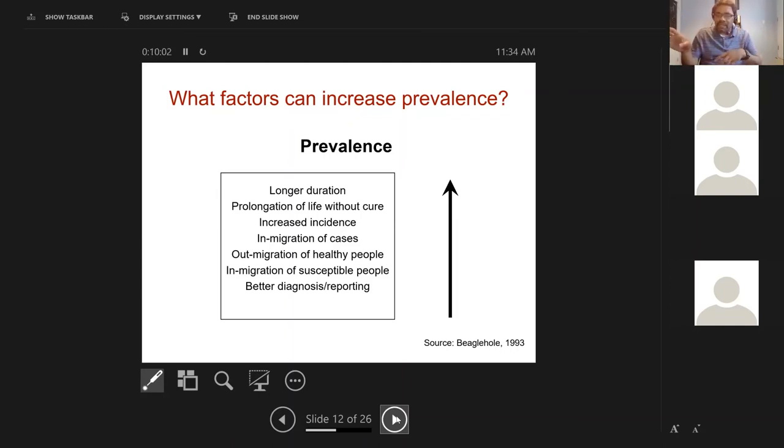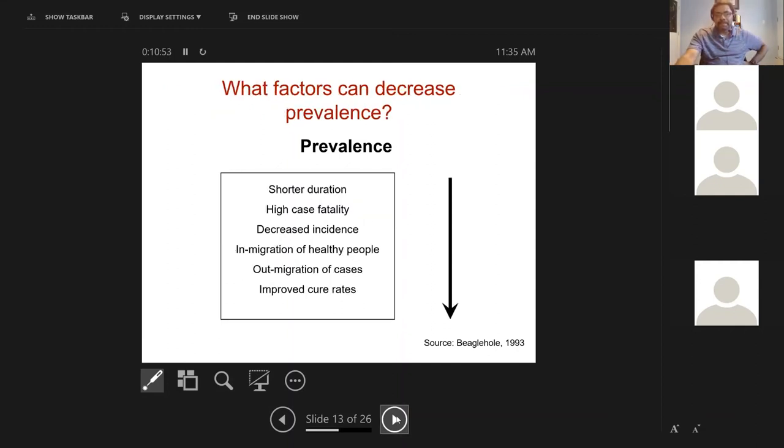In-migration of cases - suddenly a whole bunch of people with infection coming into the community, then it pushes up your prevalence. Out-migration of healthy people - sick people came in, healthy people moved out, your denominator is shifting. That can increase incidence. Better diagnosis and reporting is often underestimated. If you simply didn't have a good surveillance system, you might think the disease prevalence is low. Once you have a good mechanism for investigation and diagnosis, suddenly your disease rate starts looking much higher. It's not that it went up suddenly - it's because you're picking it up at a higher rate. And this is often important in this particular pandemic. I think testing for COVID is one of the biggest rate-limiting steps. You don't test, you don't pick up COVID, you are underestimating your disease burden.